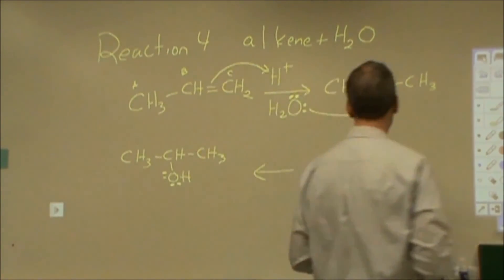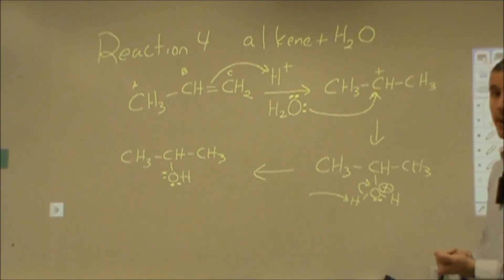So our fourth reaction, we have an alkene react with water. We do require an acid catalyst to get that to happen obviously. And this would be the curly arrow mechanism to show how that happens.